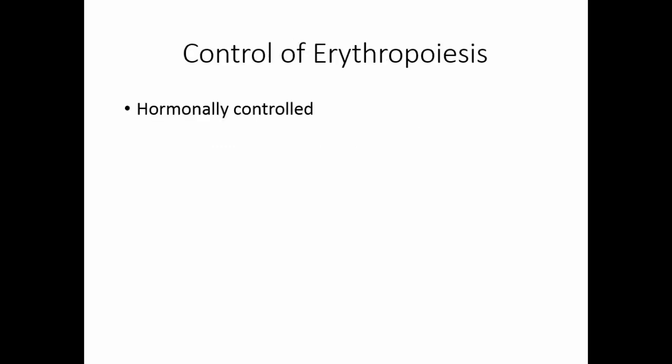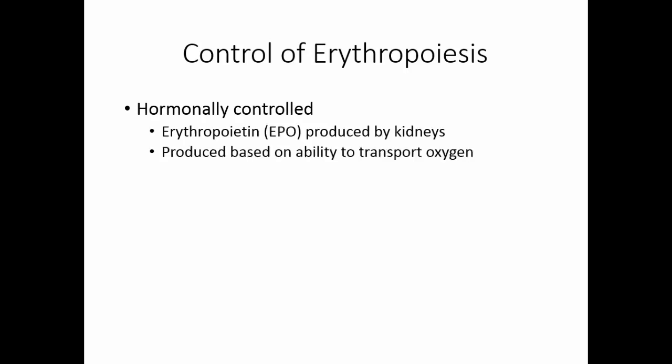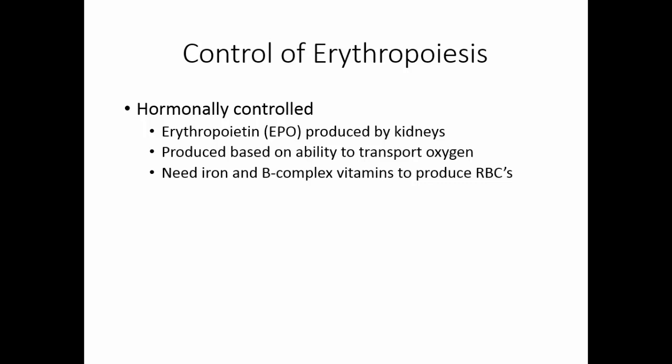Erythropoiesis is hormonally controlled by erythropoietin, produced by the kidneys based on the blood's ability to transport oxygen. For the red bone marrow to produce red blood cells, there must also be an adequate supply of iron and B-complex vitamins, particularly B12. Red blood cells live in circulation for about 120 days, then are removed primarily by the spleen. The red blood cell is recycled — iron and protein components are saved.